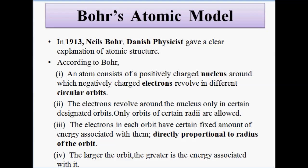The second postulate is that electrons revolve around the nucleus at a fixed distance from it. There is a fixed distance between the nucleus and the revolving electrons, which means that only certain designated orbits are allotted to the electrons — orbits of fixed radius are allowed.